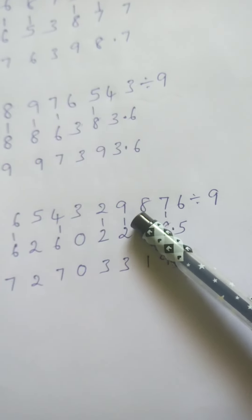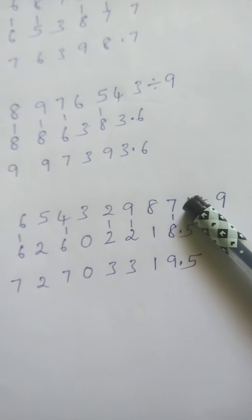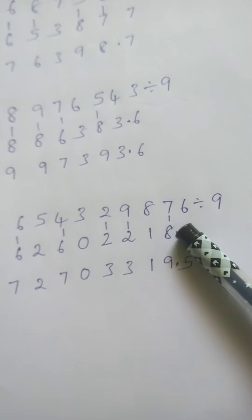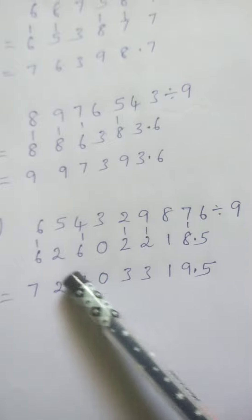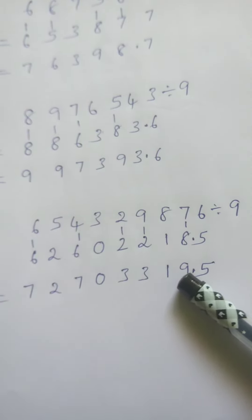2 plus 8 is 10, 10 minus 9 is 1, carry 1. 1 plus 7 is 8. 8 plus 6 is 14, 14 minus 9 is 5, carry 1. So the answer is 7 2 7 0 3 3 1 9.5.